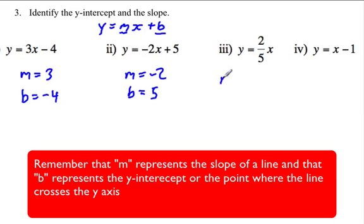For this one, y equals 2 over 5x. Our slope is 2 fifths or 2 over 5, so a rise of 2 and a run of 5. And our b is 0.